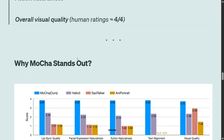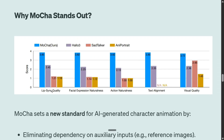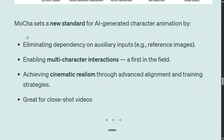On the evaluation benchmark, MOCHA is assessed across five categories: lip sync quality, facial expression, action, text alignment, and visual quality. In all five categories, MOCHA outperforms contemporaries like AnyPortrait, SadTalker, and Hello3 by a big margin. It is setting new boundaries by eliminating dependency on auxiliary input, supporting multi-character interaction, and achieving cinematic realism that could be used as part of a movie.